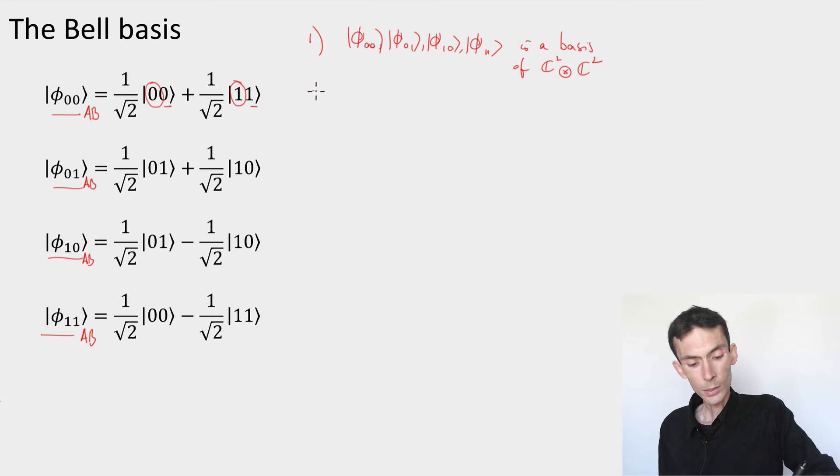So the reduced density, rho A, is equal to half identity. And similarly, I could compute rho B, which is also equal to half identity. We can do the exercise on any of these states. For instance, I could take the third state, I would again measure B in the computational basis, and observe that A is left in the totally mixed state. So the reduced density here are the same.